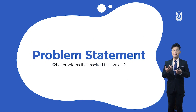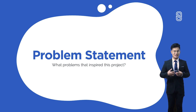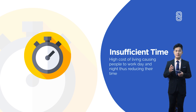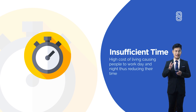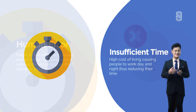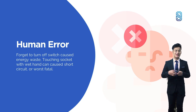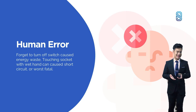Now the problem statement — what problems inspired me to do this project? We have three problems. First is insufficient time. High cost of living causes people to work days and nights, reducing their time to do simple things such as switching the light switch every day at home. Second is human error — forgetting to turn off the switch when leaving the house can cause energy waste. Touching a socket with wet hands can cause short circuit or worse, death.